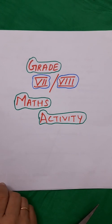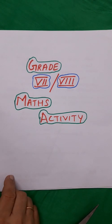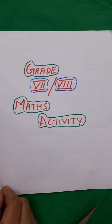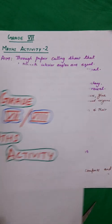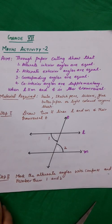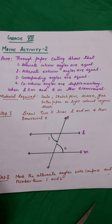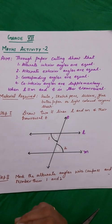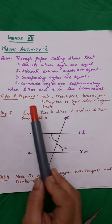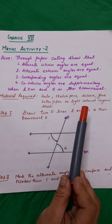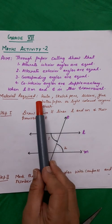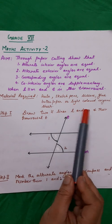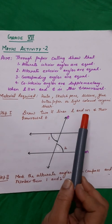Hello students, welcome to maths activity session. Today our activity is to show through paper cutting that alternate interior angles are equal, alternate exterior angles are equal, corresponding angles are equal, and co-interior angles are supplementary when L is parallel to M and T is the transversal.